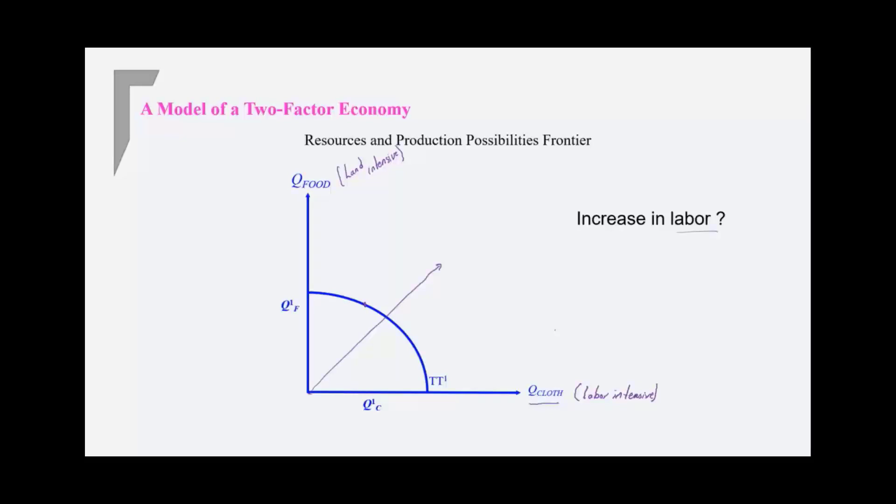So what happens when there's an increase in labor supply? What happens to the production possibility frontier? Those of you who have your notebooks out, try this. So increasing labor, you have more resources. That means you can produce more. So the production possibility frontier is going to shift out. Now, the question is, is it a parallel shift or not? Well, no, because the good that is more labor intensive, from that side, you would have a bigger increase than for the other side.